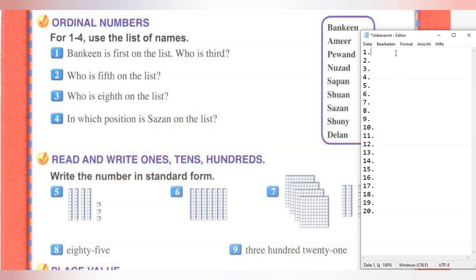Use the list of names. We have four questions and one box with names. First, Bankson is first on the list. Who is third? We must choose the person which is on the third position.